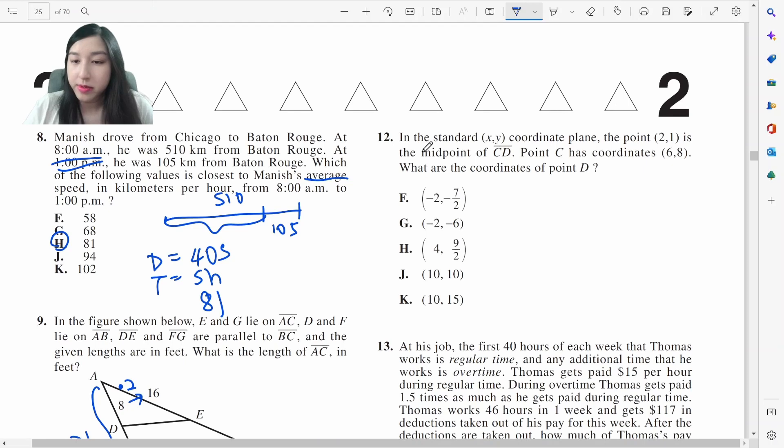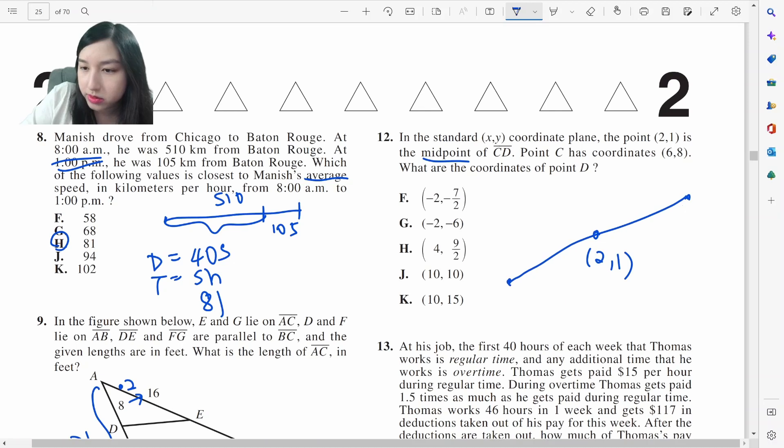Midpoint of CD. So here is point D at 2,1. And point C is 6,8, which will be here. So this is D. 4 to the left of 6. So 4 to the left of 2 is negative 2. 1 is 7 below 8. So 7 below 1 is negative 6. It's going to be G.